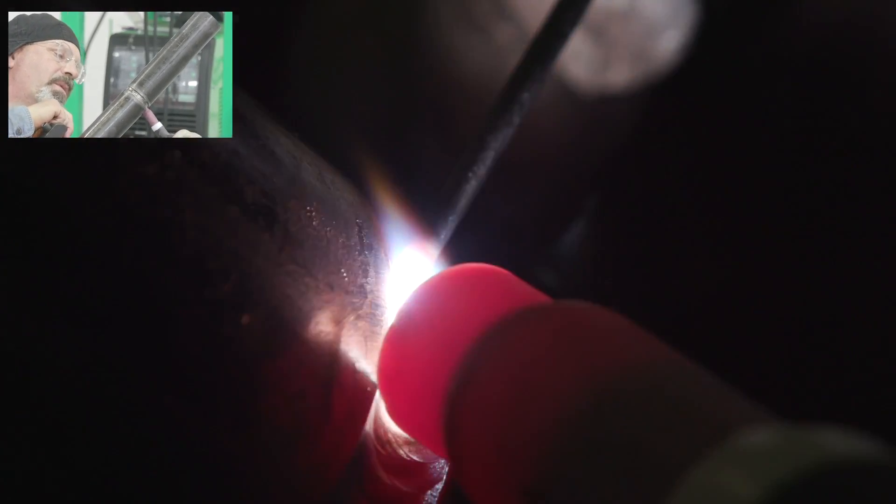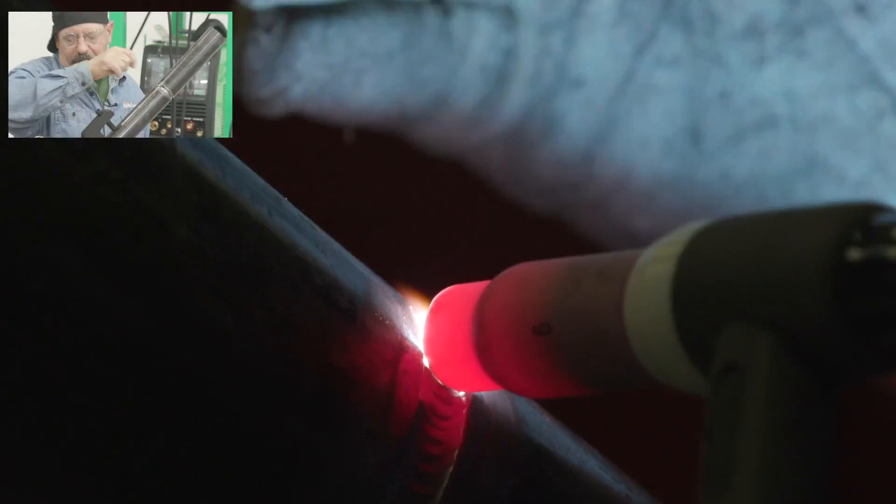So this is the fill pass and I'll probably get back up underneath here, rest the cup in here gently and try to walk this in. Just try to gently walk this in here and get some fill pass. I'm only running 120 amps because I don't want to re-melt the root pass.